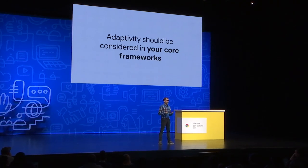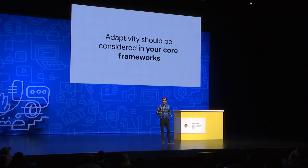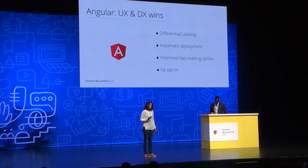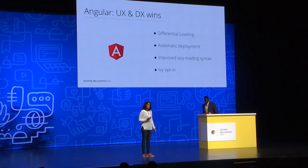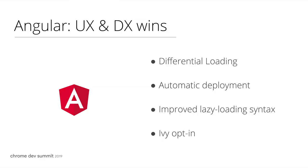Once we have these core metrics and we're able to break them up and have a consistent understanding of what different types of hardware are, we can consider this in our core frameworks. We're in close contact with the Angular team and really excited for their achievements on both UX and DX. In particular, they ship differential loading which reduces polyfills in modern browsers, and they have automatic deployments to different platforms.